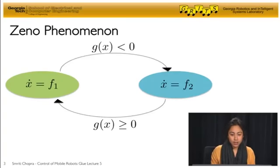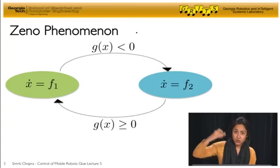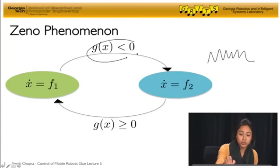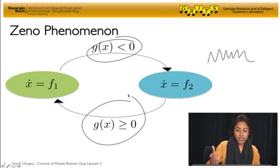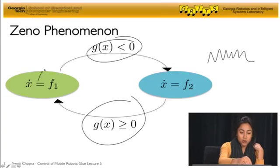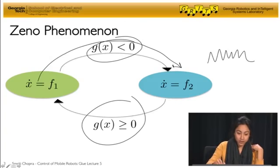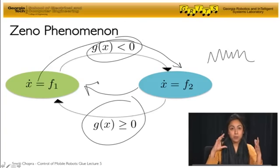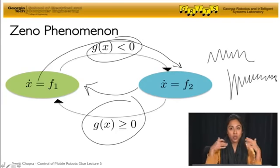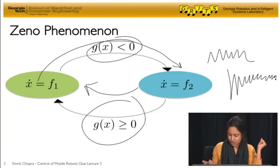And then we, while studying this hybrid automata, came across this phenomenon called Zeno effect. And what is that, really? It's this annoying thing that makes your state or your system just kind of go really fast between your guard conditions. So here, your guard, when it's less than 0, you go from X dot F1 to F2. When it's greater than or equal to 0, you switch back. But the problem is when it's equal to 0, you switch and then you just keep switching between these two modes infinitely fast. And that's something we don't want in our system. And this is called Zeno phenomena.